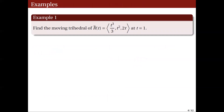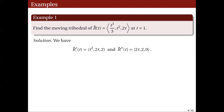For our first example, let's find the moving trihedral of the vector-valued function r(t) = (t³/3, t², 2t) at the point where t = 1. First, let's compute the necessary derivatives: r'(t) = (t², 2t, 2) and r''(t) = (2t, 2, 0).